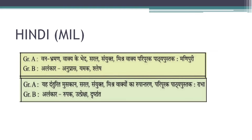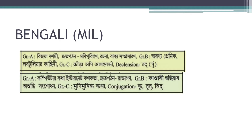For Hindi: bachya ke bhed, charal sangyut mitra bachyan, mishra bachya, paripura. Path pushtak includes boyishitra mayasam, manipuri and rabha — these two are required. Also yah duntarit muskaan, saral sangyuk, mishra bachya and rupantaran. In Group B you will read alankar: anupraash, yamak, and shles.